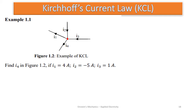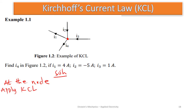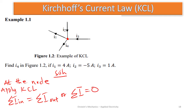We have a node. We have to find the current i4. Given: i1 is 4 amperes, i2 is negative 5 amperes, and i3 is 1 ampere. At the node, we are going to apply Kirchhoff's Current Law, which says the summation of current inside a node equals the summation of current flowing outside, or the summation of all current at a node equals zero.